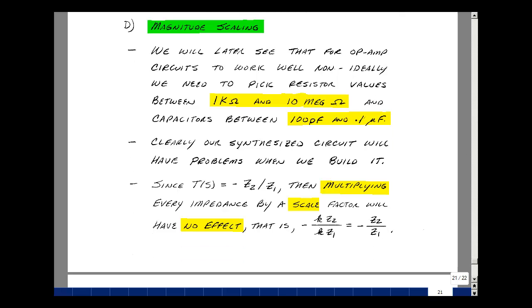Suppose I want to build the circuit we just designed. For op-amp circuits to work well non-ideally, we need to pick resistors and capacitors carefully. If you pick resistors between 1k and 10 megaohms, you'll generally avoid some problems. When resistance is much smaller than 1k, you draw currents that can exceed the maximum allowable output. Resistors generate noise that depends on bandwidth and resistance value. For capacitors, staying between 100 picofarads and 0.1 microfarads can avoid problems. Clearly, our synthesized circuit will have problems with it.